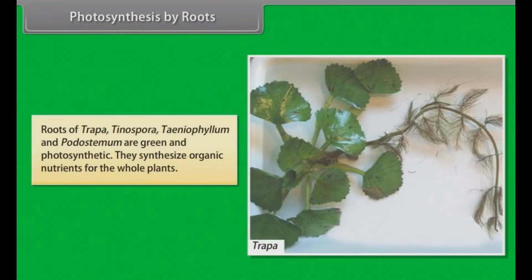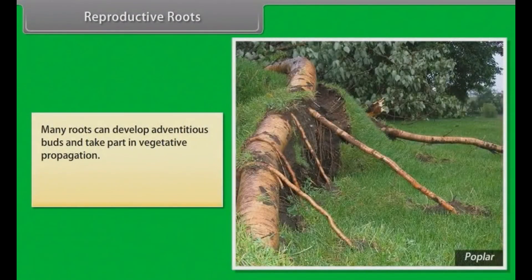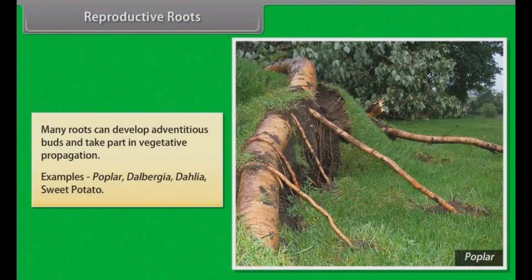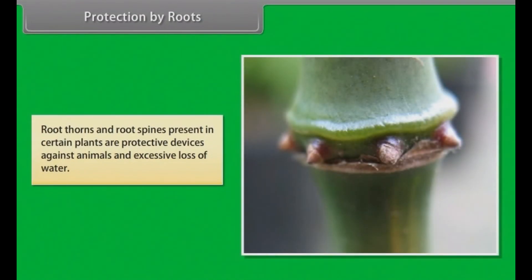Photosynthesis by roots: Roots of Trapa, Tinospora, Taeniophyllum and Podostemum are green and photosynthetic. They synthesize organic nutrients for the whole plant. Reproductive roots: Many roots can develop adventitious buds and take part in vegetative propagation. Examples: Populus, Dalbergia, dahlia, sweet potato. Protection by roots: Root thorns and root spines present in certain plants are protective devices against animals and excessive loss of water.